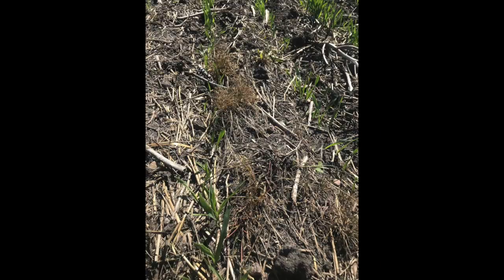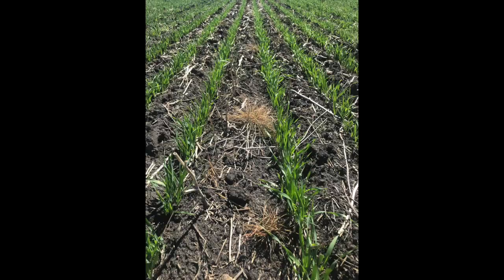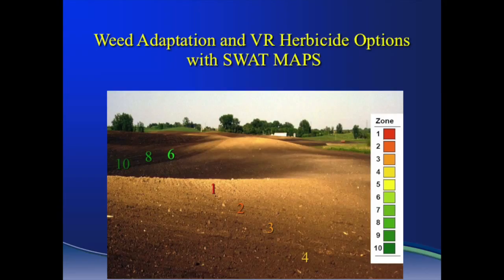11 days after application, ground truthing shows that excellent control of foxtail barley has been achieved with this prescription. Now that you've seen that example, I'm going to show you a few more opportunities on how we can use swap maps to vary herbicide applications based on weed adaptation and some other factors related to soil, water, and topography in the field.